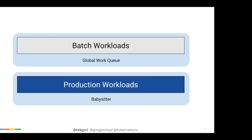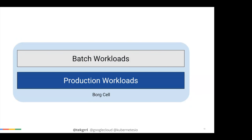At the point where we could actually run containers, we had two systems: a global work queue for batch workloads, and something called Babysitter that ran all our production workloads. A nanny kept running processes alive. There were problems with this model, so we decided to combine the two into what is known as a Borg cell. Borg is our cluster manager — effectively the orchestration component and our initial equivalent of Kubernetes. We now run batch and production workloads on the same machines, in the same cells, in the same data centers.